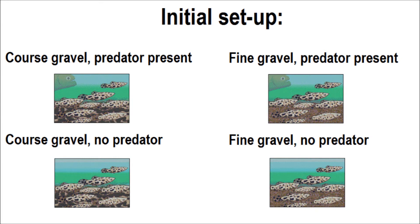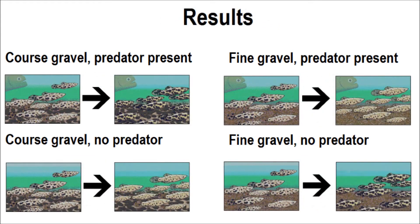After the experiment had been running for five months, Endler took a census of all the ponds and counted and measured the spots on all the guppies in all the ponds. Nine months later — that is, after 14 months in all — he took another census, counting and measuring in the same way. And what of the results? They were spectacular, even after so short a time.